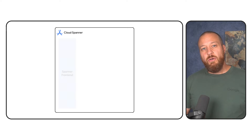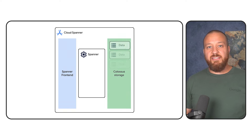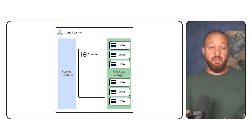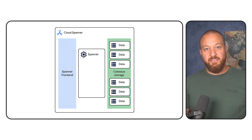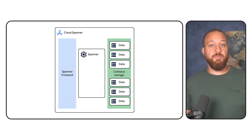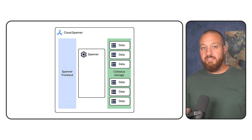Spanner is a distributed relational database that ensures transactional workloads have strong consistency at any scale, with very low latencies for reads and writes of your data. One way Spanner is able to achieve this is by separating compute and storage. When you set up a Spanner instance, you specify how much compute resources you need in terms of full nodes, or processing units for smaller workloads.